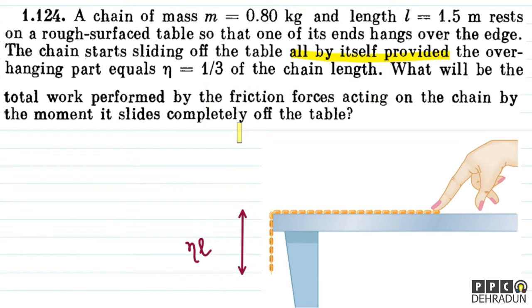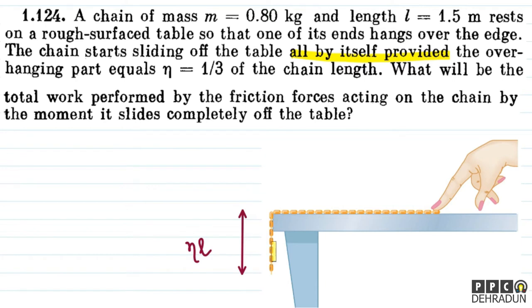अगर ये जो overhanging part है उसकी value eta times the chain length हो जाए, मतलब कि अगर total length of the chain L है, तो ये portion eta times L हो जाए, तो उसके बाद ये खुद-बखुद slide करना चालू कर देती है। वरना eta L से कम portion अगर hang कर रहा होगा तो ये chain रुकी रहती।